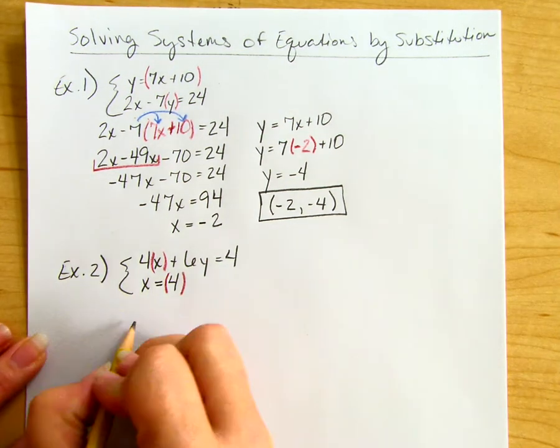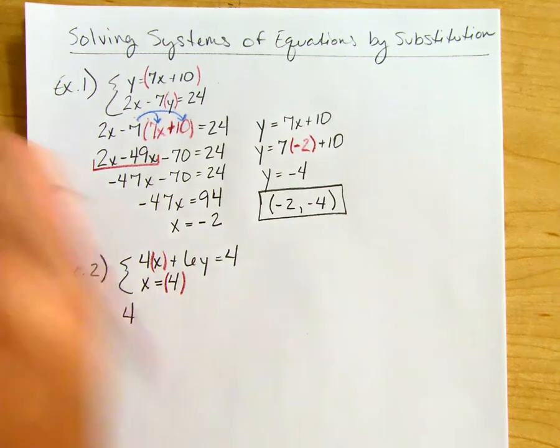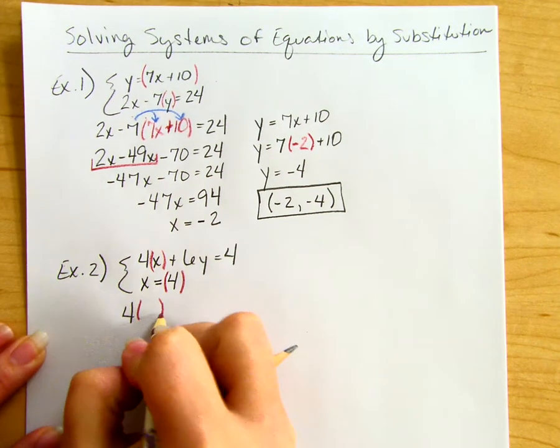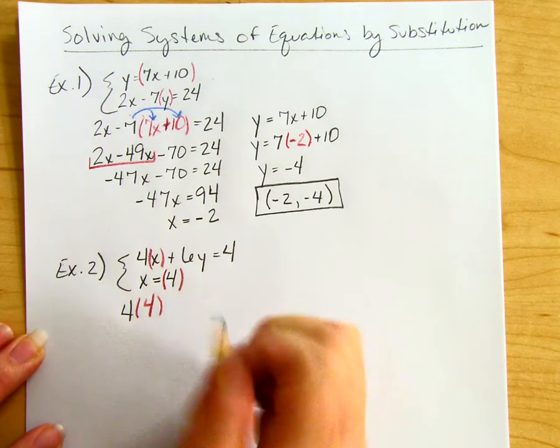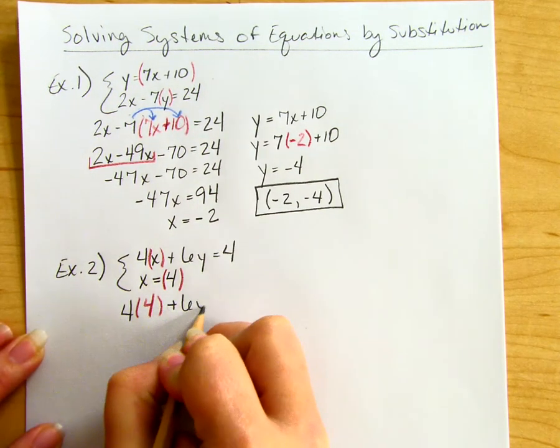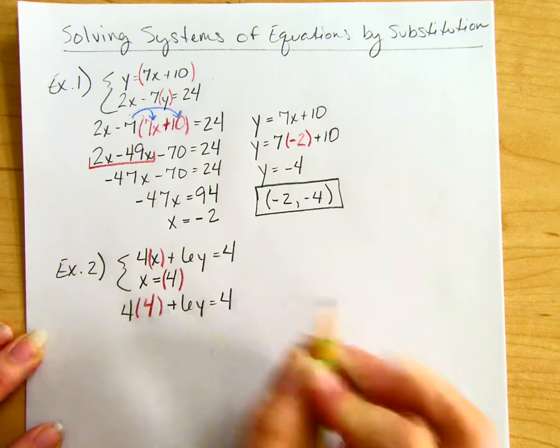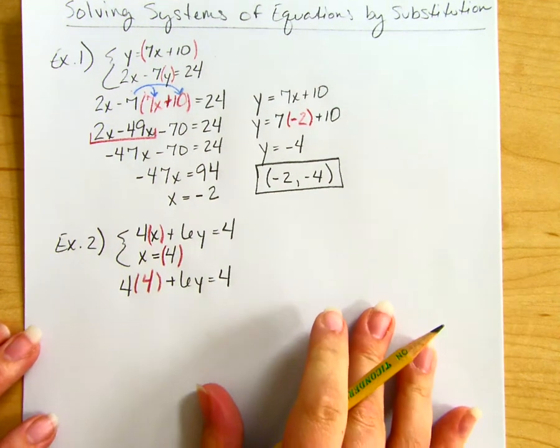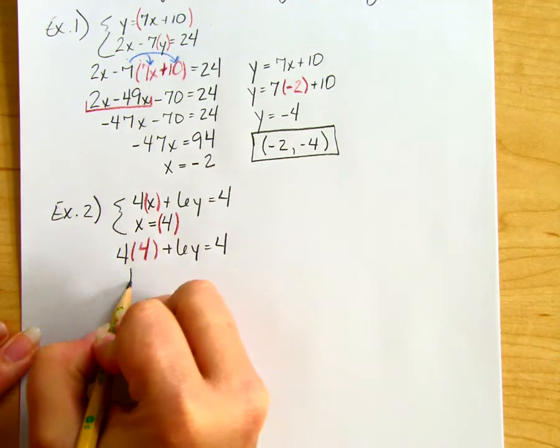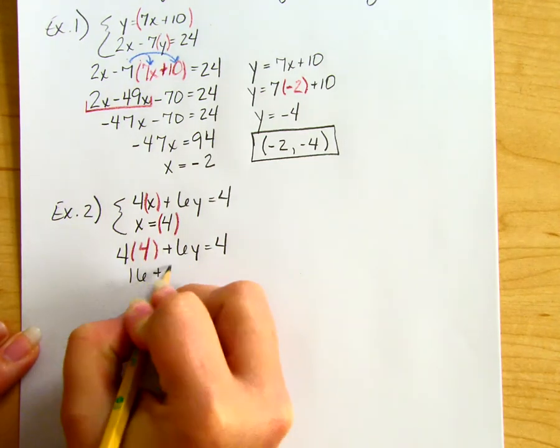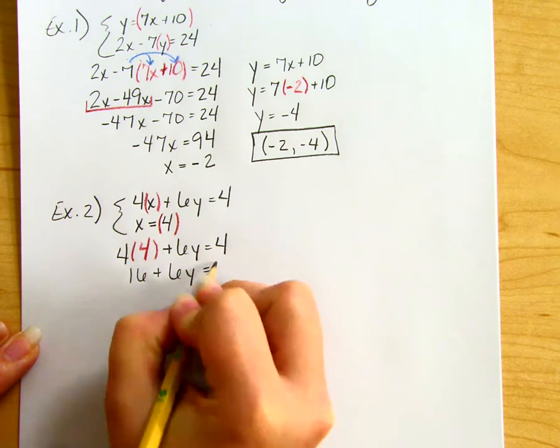So I'll plug it in: 4 times 4 plus 6y = 4. Since 4 times 4 is 16, I have 16 + 6y = 4.